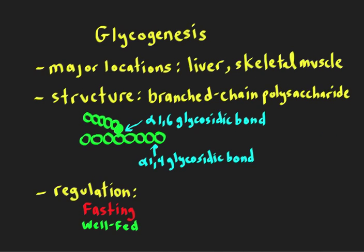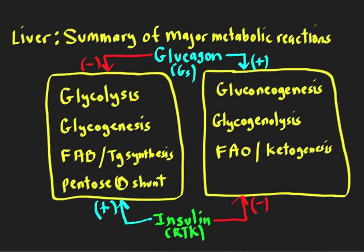Let's review the summary diagram of all metabolic reactions. We can see that glycogenesis is grouped together with glycolysis, fatty acid synthesis, triglyceride synthesis, and the pentose phosphate shunt in the liver. When glycogen synthesis is turned on, glycolysis is active, we're making fatty acids and triglycerides, and we're running the pentose phosphate shunt to provide NADPH for reductive biosynthetic reactions. Simultaneously, because we don't want futile cycles, when glycogenesis is on, we're turning off glycogen breakdown.